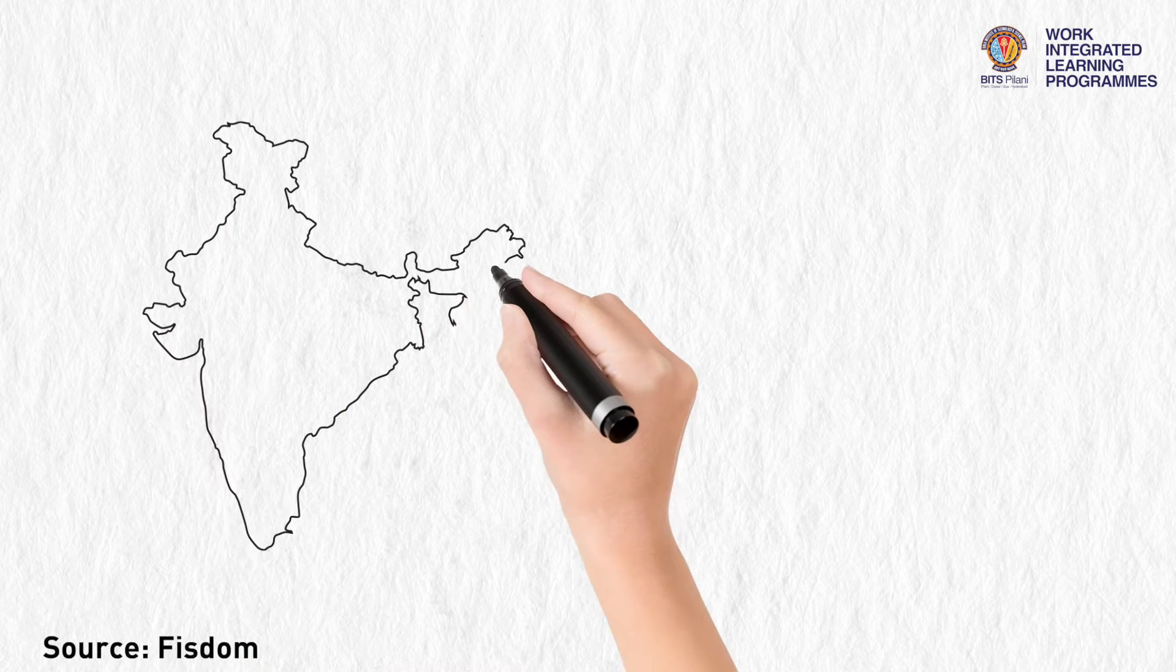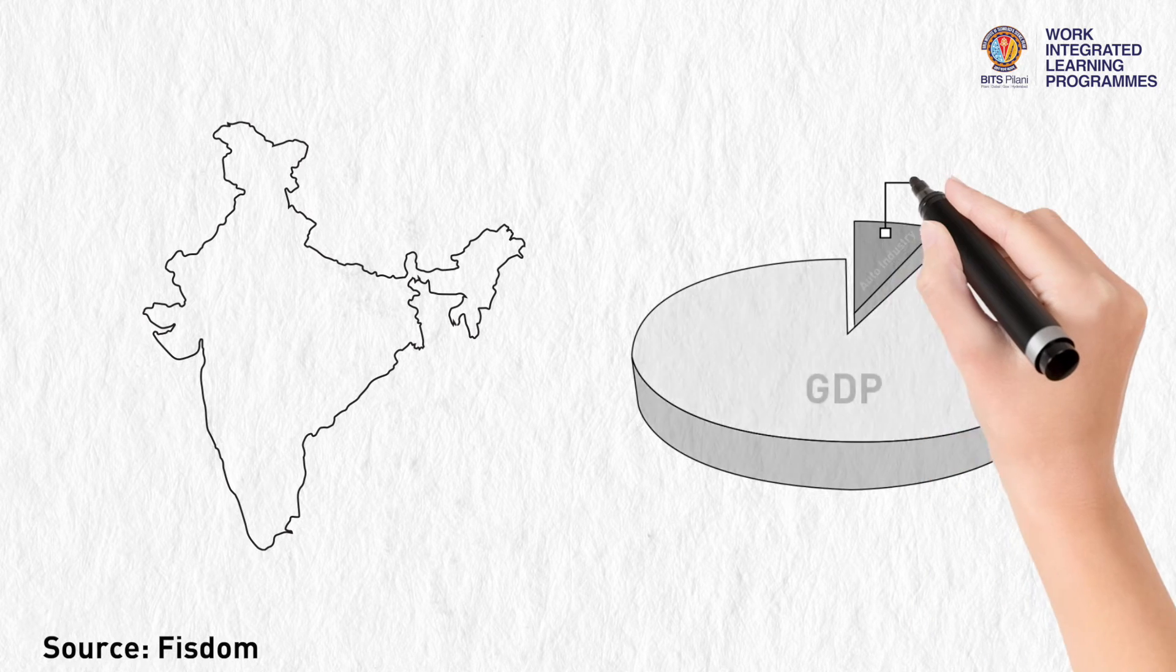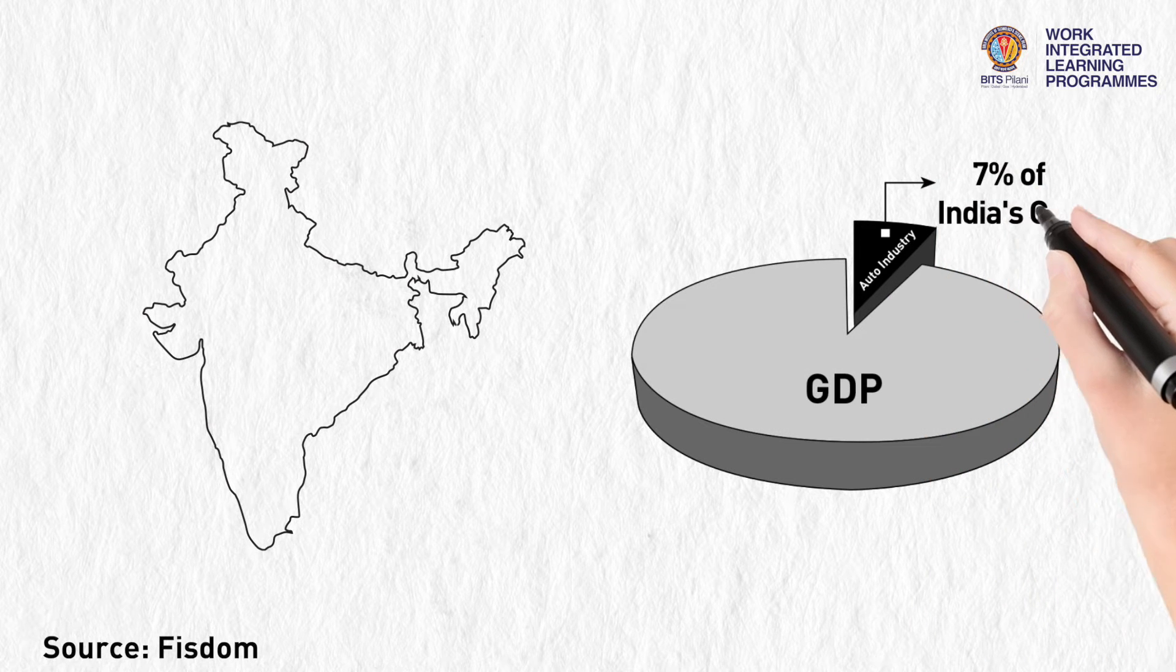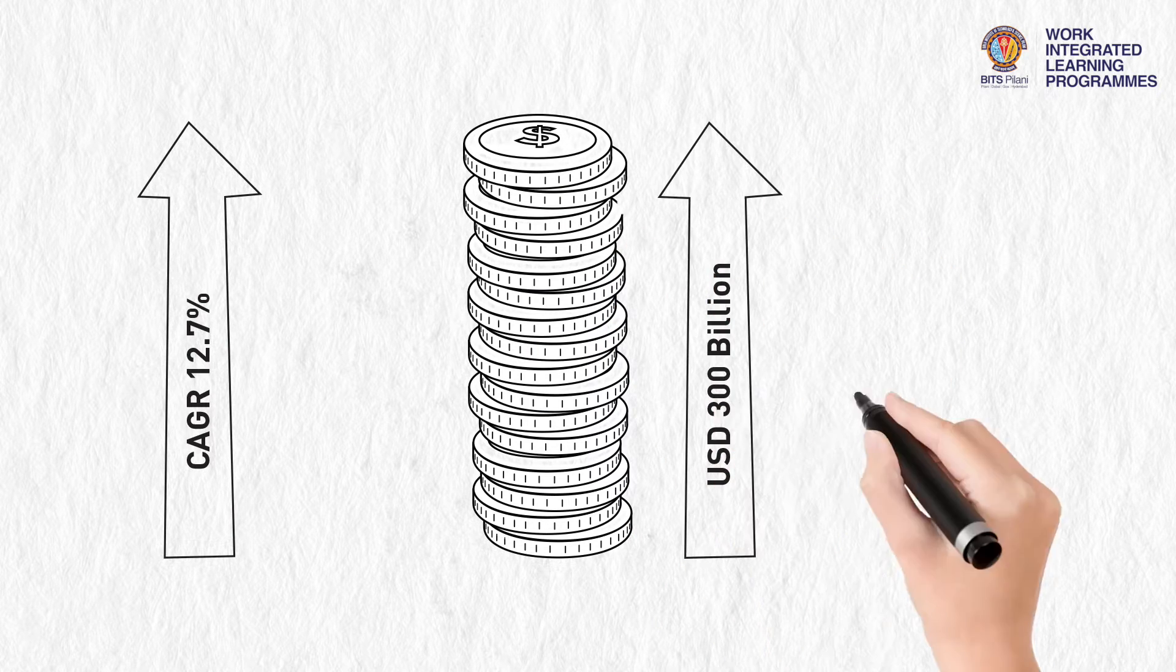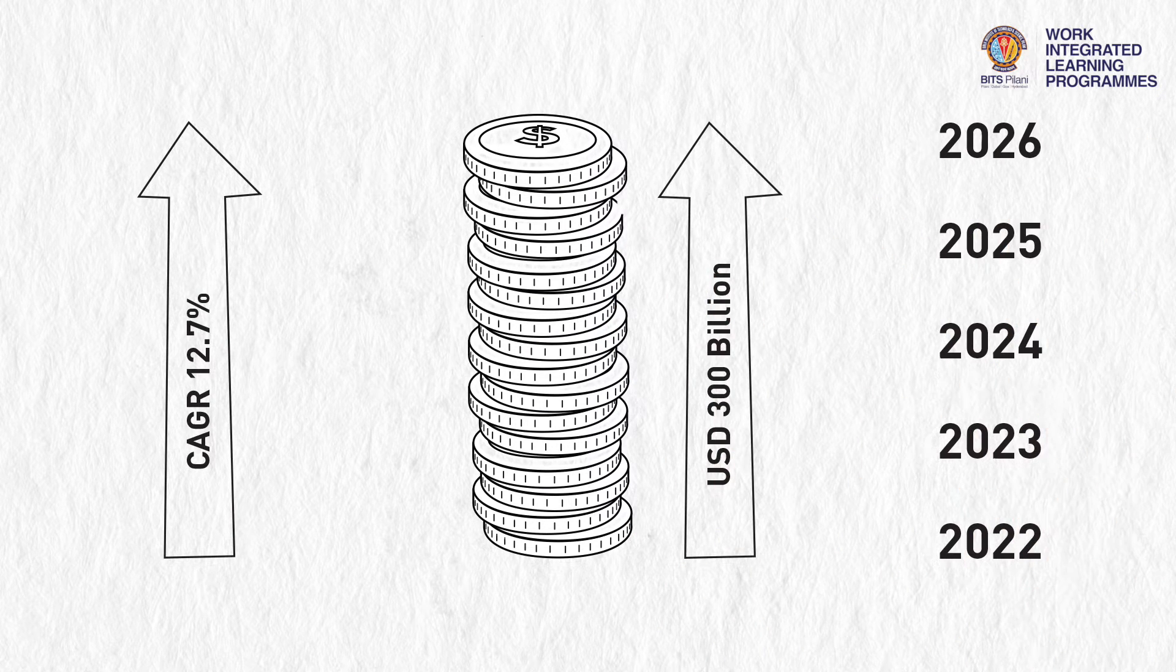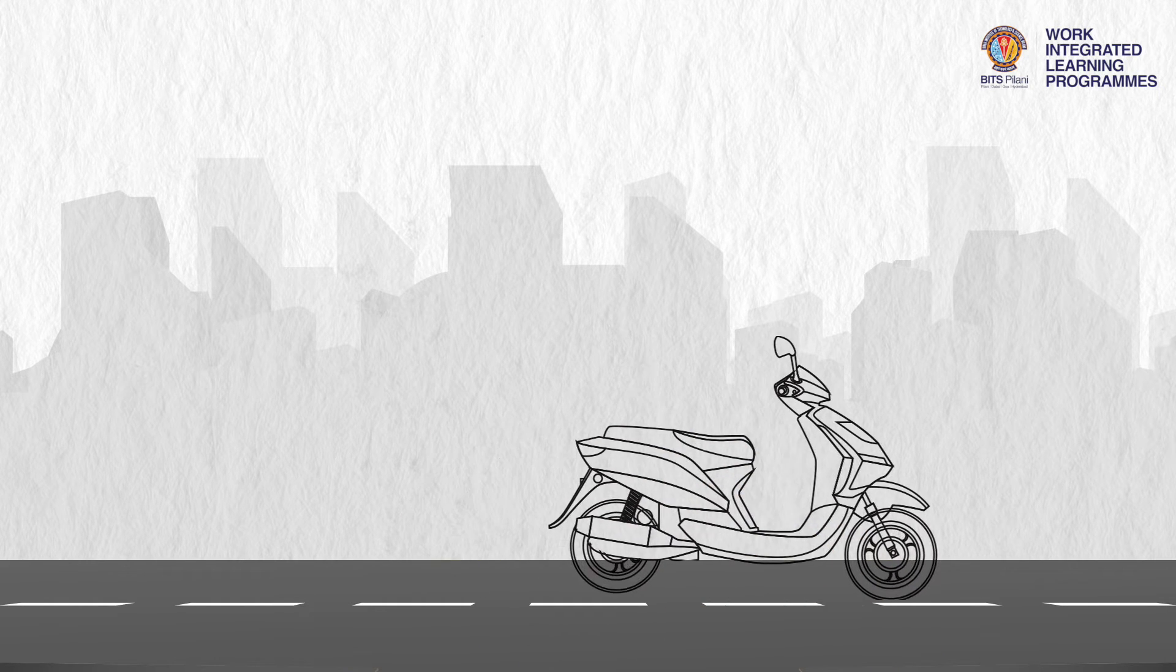The auto industry in India is the fourth largest in the world and accounts for approximately 7% share of the GDP of the country. This industry is set to increase at a CAGR of 12.7% and reach about 300 billion US dollars by the end of 2026. India is considered to be the top manufacturer of two-wheelers and the largest car manufacturer.